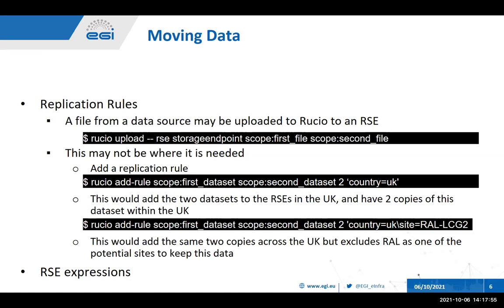If the data has just been produced, you may wish to have more resilience within your data to make sure that it's at multiple sites should anything go wrong. For that, you can use things called RSE expressions. This includes, as an example, 'country equals UK', which will make sure that data sets will be copied to two endpoints throughout the UK. You can also exclude sites, or set various other parameters to RSEs that you can tell Ruscio about, and it will look through these parameters and make sure they match when you want to move this data around.